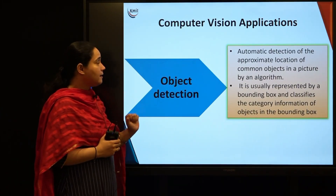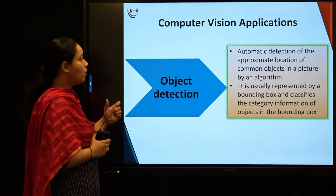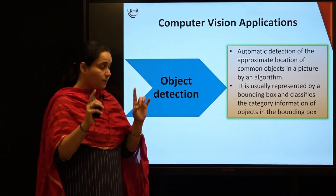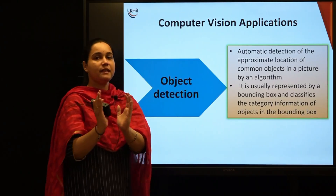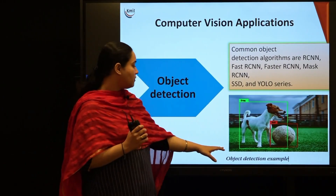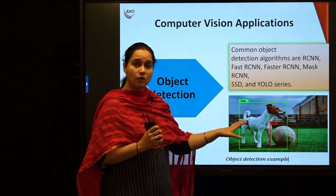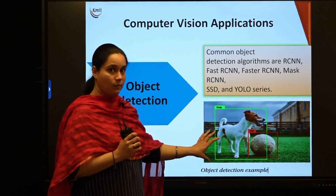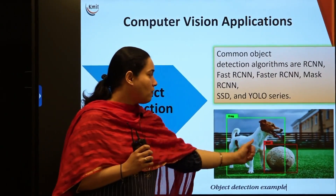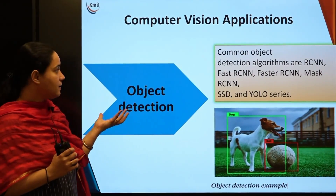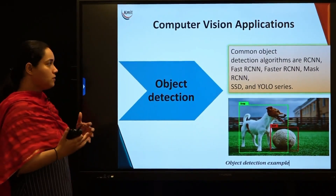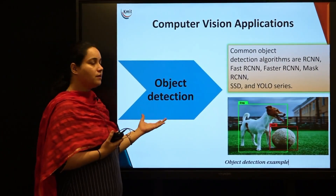The second subcategory under computer vision is object detection. Here, automatic detection of the approximate location of a common object in a picture takes place by an algorithm. It is usually represented with a bounding box and classifies the category of the object in the bounding box. For example, a bounding box can detect and label a dog or a ball within a larger image. Common object detection algorithms in deep learning are RCNN, Fast RCNN, Faster RCNN, Mask RCNN, SSD, and the YOLO series.